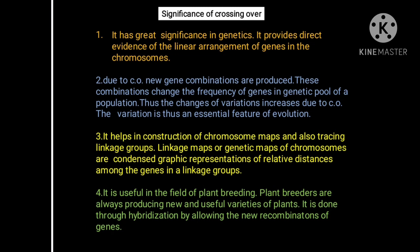After the mechanism of crossing over, we will see the significance of crossing over. It has great significance in genetics. It provides direct evidence of the linear arrangement of genes in chromosomes. Due to crossing over, new gene combinations are produced; these combinations change the frequency of genes in the gene pool of the population, increasing variation. Variation is thus an essential feature of evolution.